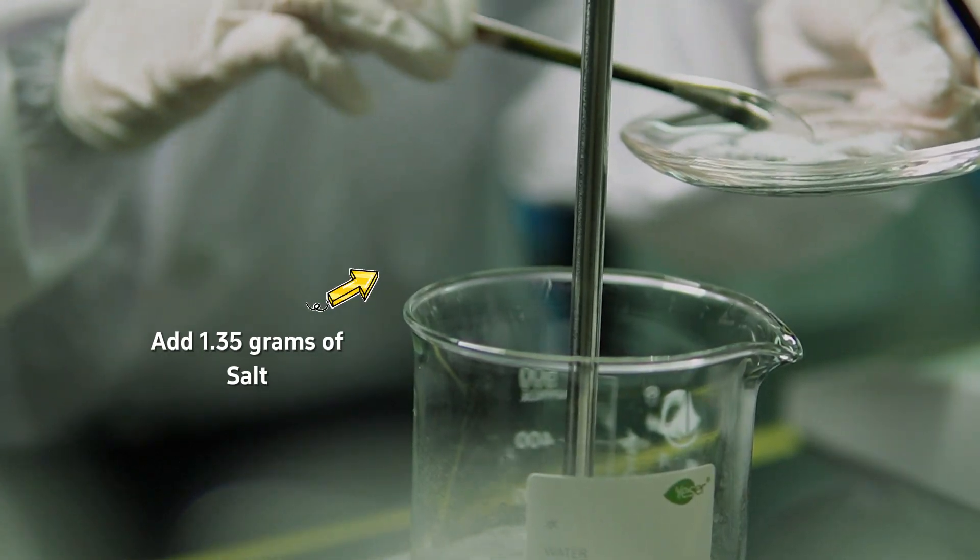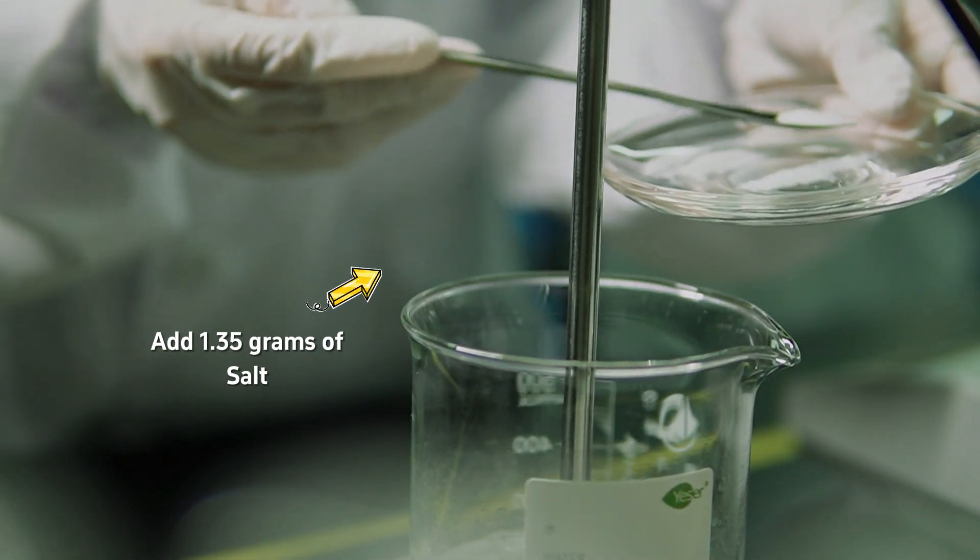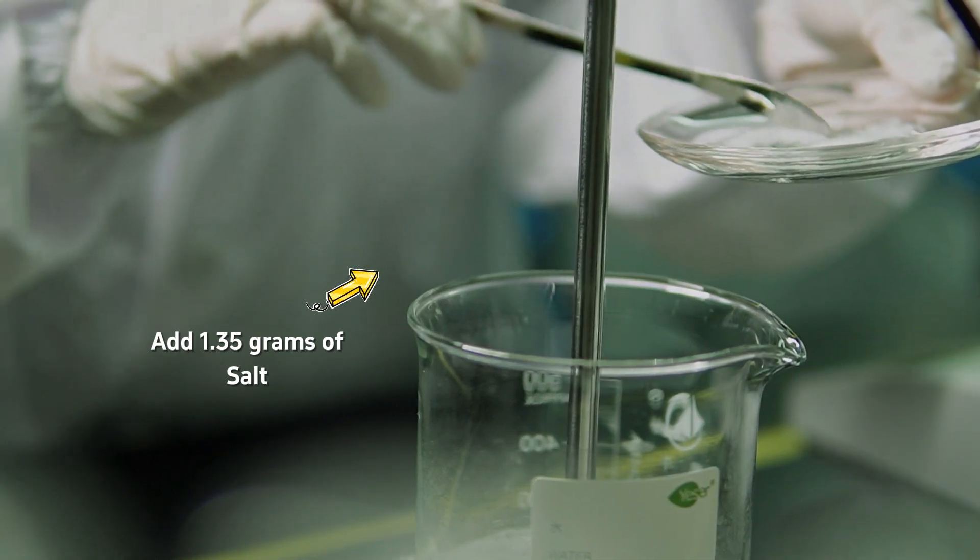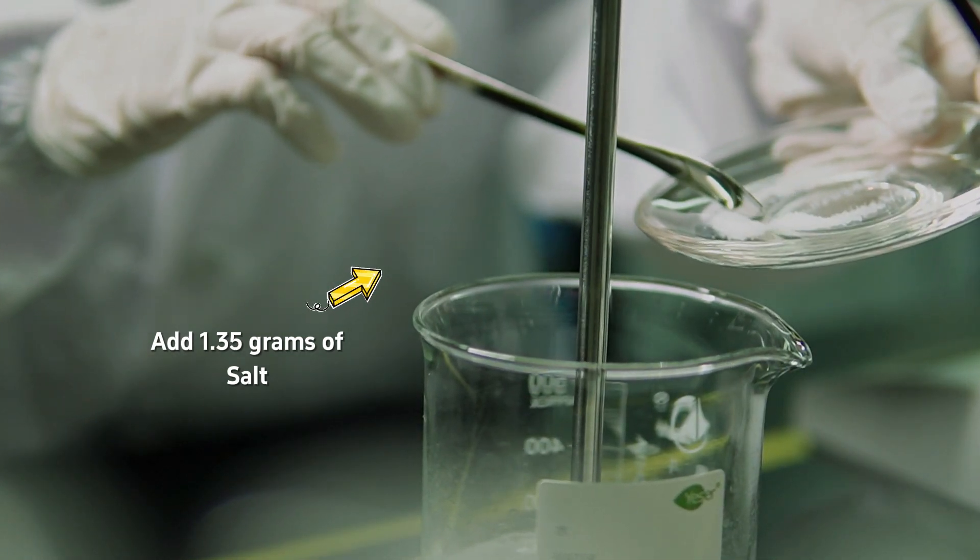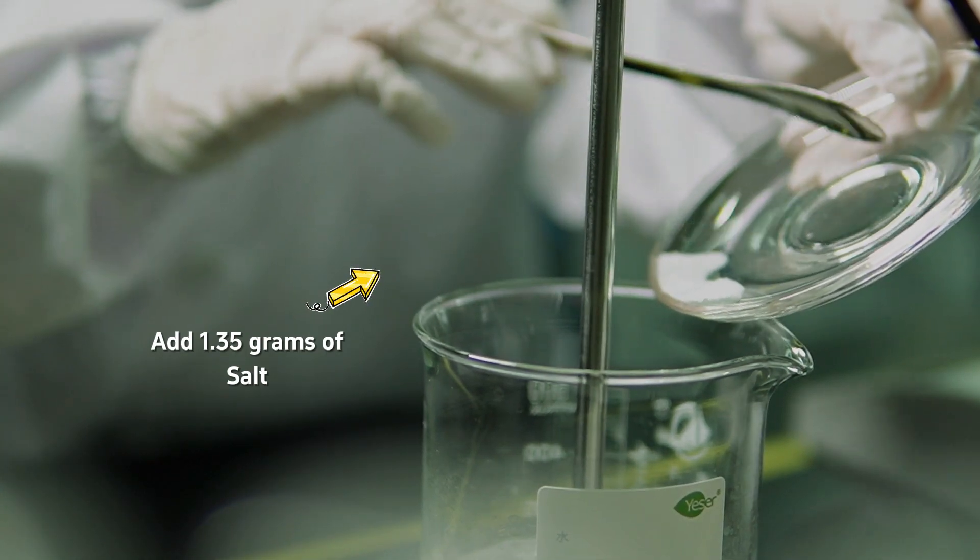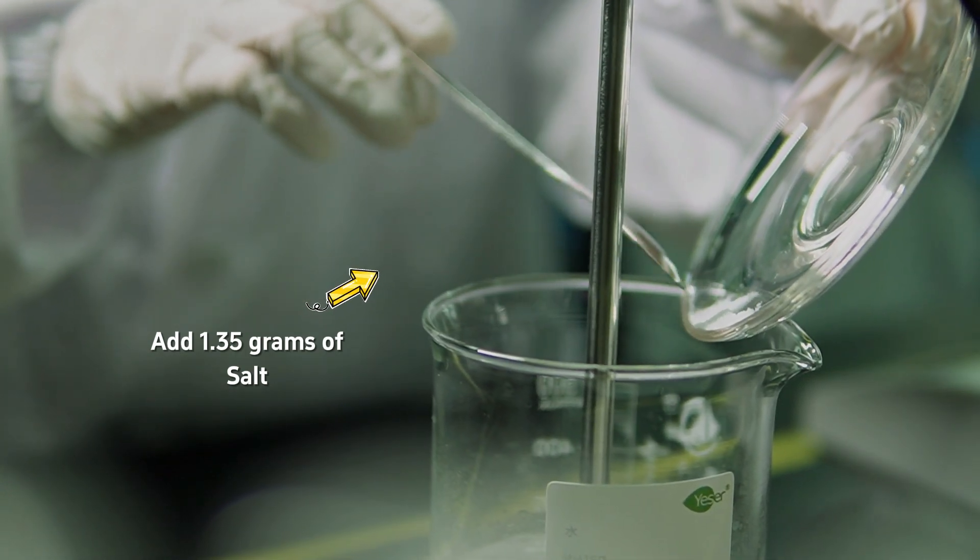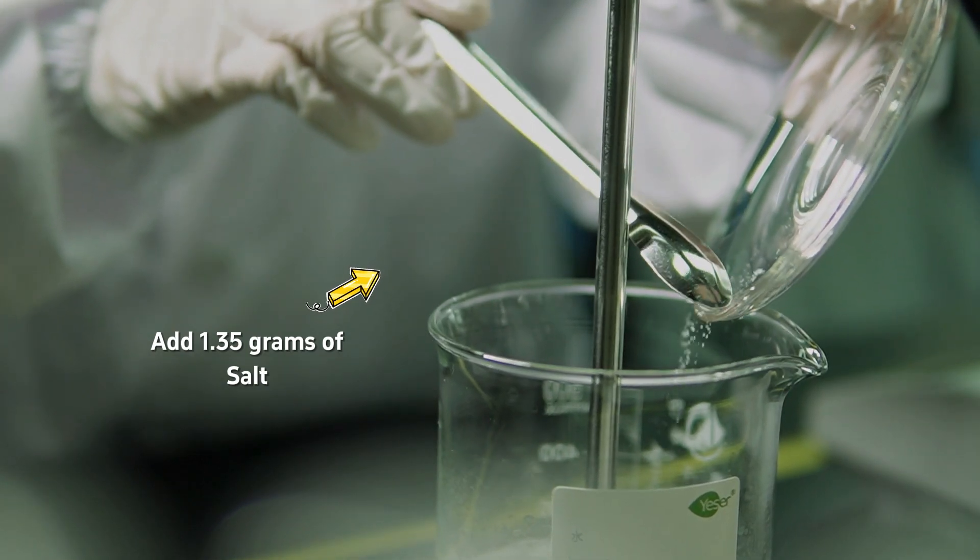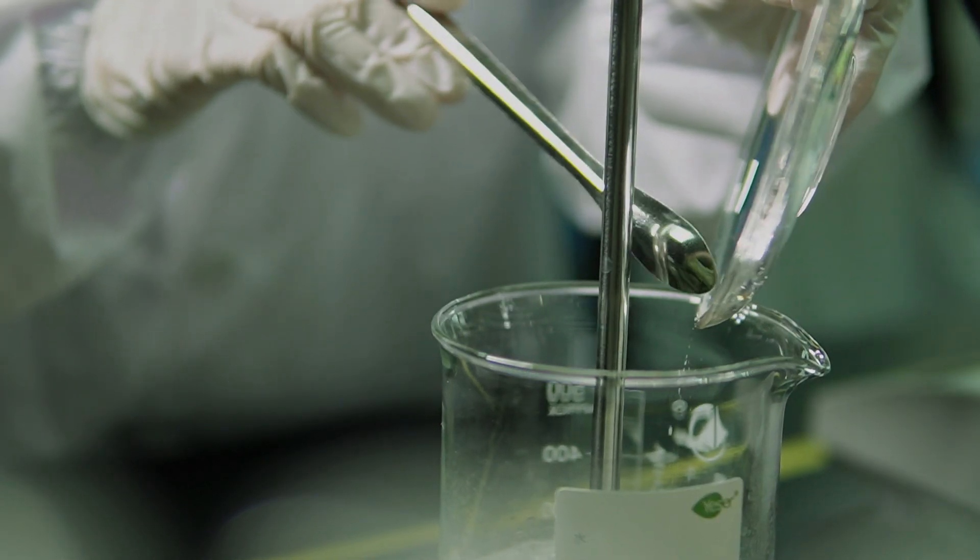Given that we'll be adding a polymer suspending agent later on, which doubles up as a thickener, we don't need a lot of salt in this formula. It's crucial to remember that a little goes a long way with salt, and over-salting can irreversibly thin out the formula. But after thorough testing, we've found that 1.35 grams is the magic number for today's Rose Petal Reverie Bath Gel formulation.